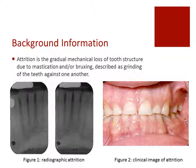In figure one, you can see a radiographic presentation of attrition. Note the decreased crown lengths. In figure two, you can also see the decreased crown lengths. This is in the clinical image, and you can see where the patient has lost some of their vertical dimension of occlusion.